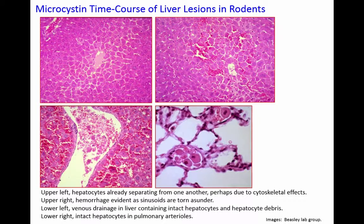These slides are from research that helped understand how microcystin damages the liver. Instead of normal hepatic plates, in the upper left you can see hepatocytes already separating, looking like cobblestones. In the upper right there is intrahepatic hemorrhage and the sinusoids are beginning to fall apart. In the lower left, hemorrhage has become extensive. Hepatocytes wash out, leaving only a few layers in the outermost part of the lobule. In the lower right, you can see pulmonary arterioles containing intact hepatocytes that have left the liver — devastating effects that can easily lead to death.